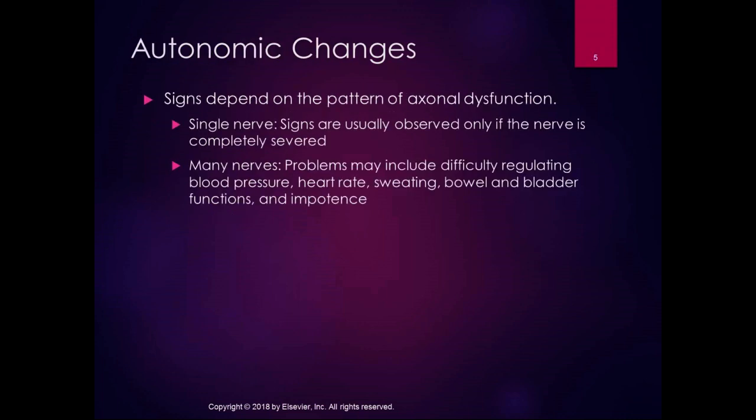Autonomic changes depend on the pattern of axonal dysfunction. If a single nerve is damaged, signs are usually observed only if the nerve is completely severed, because other nerves compensate somewhat. If many nerves are damaged, problems may include difficulty regulating blood pressure, heart rate, sweating, bowel and bladder functions, and impotence.